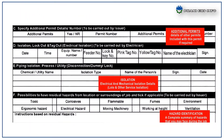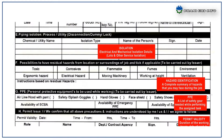The next section is about additional work permits — details of other permits included with this permit if required. The next section is about isolation — electrical and mechanical isolation details like LOTO and other service isolation details. The next section is about hazard identification — a complete summary of hazards that you may face during the job.